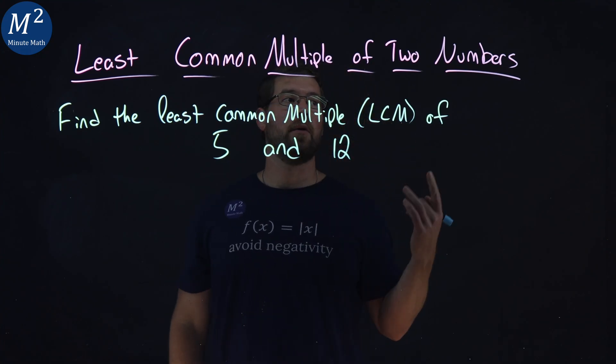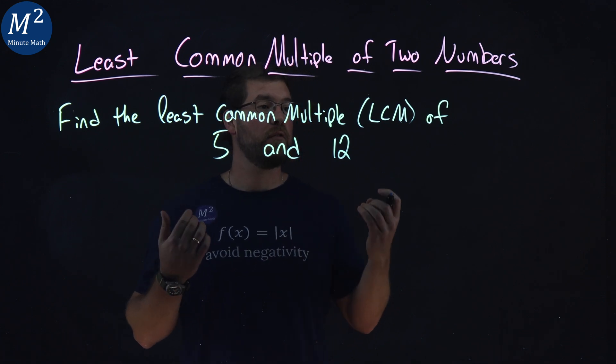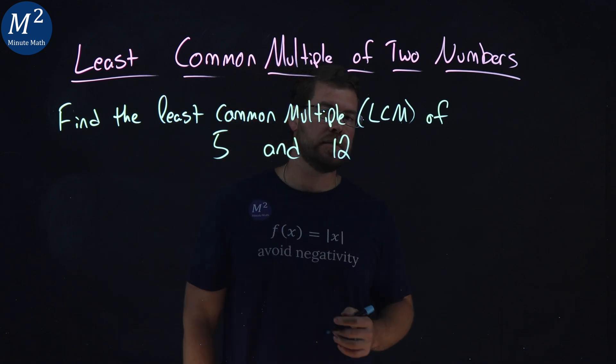Let's learn about finding the least common multiple of two numbers. We want to find the least common multiple, LCM, of 5 and 12.